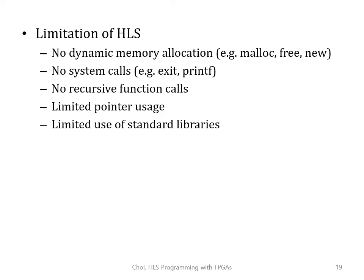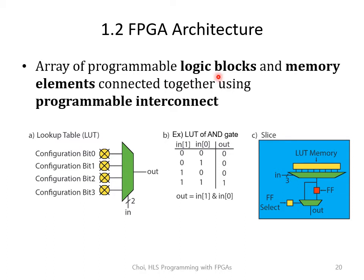Let's take a detailed look at the FPGA platform. FPGA is an array of programmable logic blocks and memory elements connected together using programmable interconnect. The logic block is implemented as a lookup table, or LUT. It provides a mapping between input and output signals so that you have the intended output for a particular set of inputs. For example, to implement an AND gate, you set 0 on configuration bits 0, 1, and 2, and set 1 on configuration bit 3. The MUX will choose the right value using the input signal as a select signal.